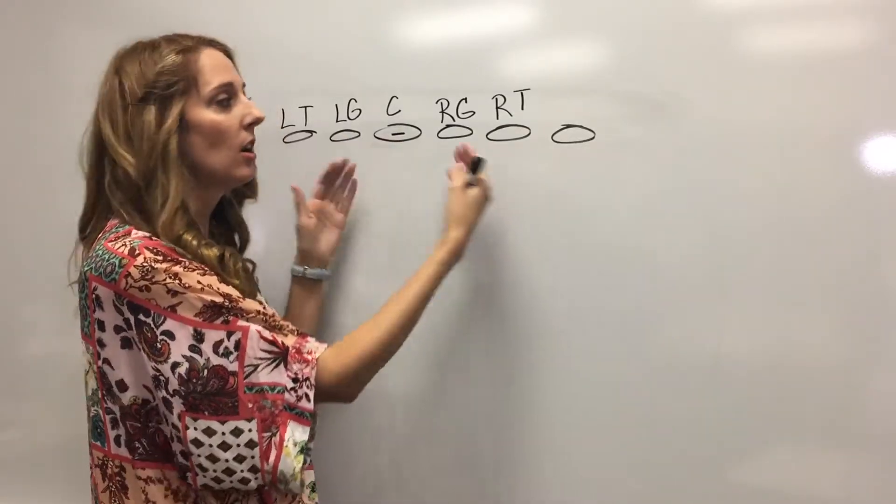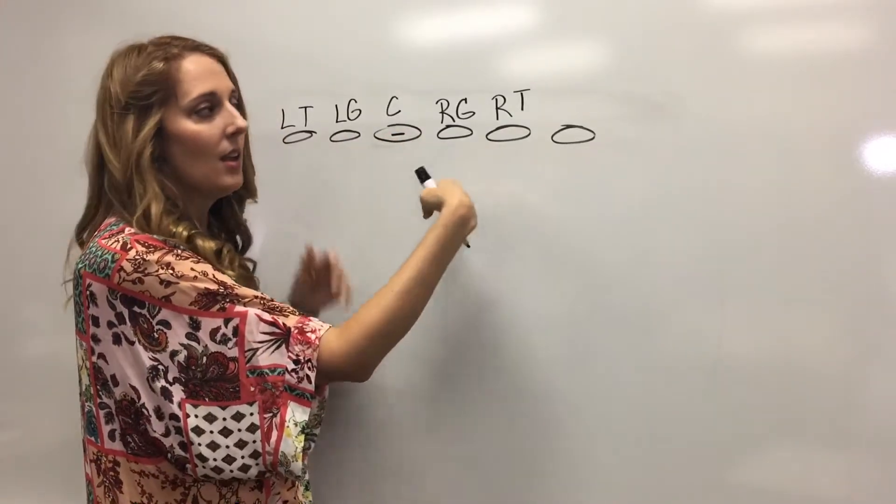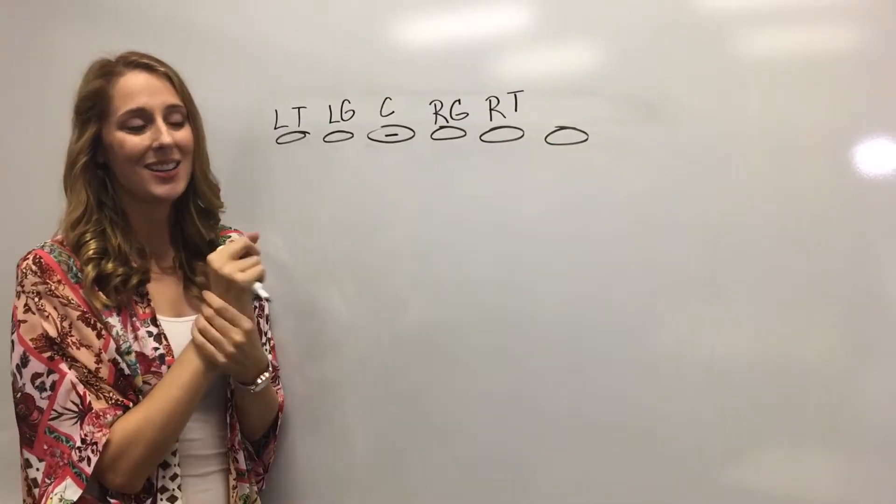So when we're working our way out from center it goes center guard tackle. Now this other circle over here is our tight end.